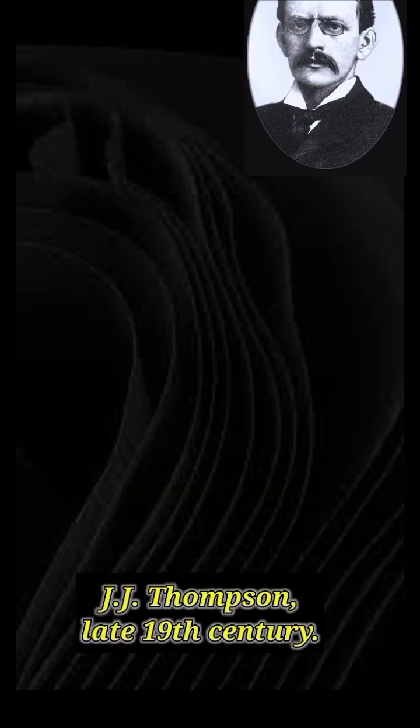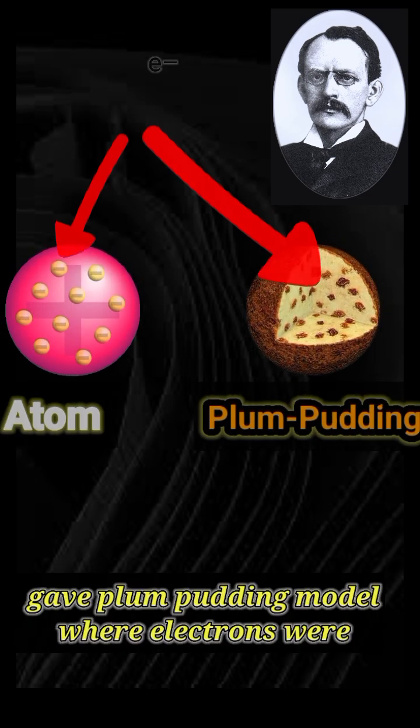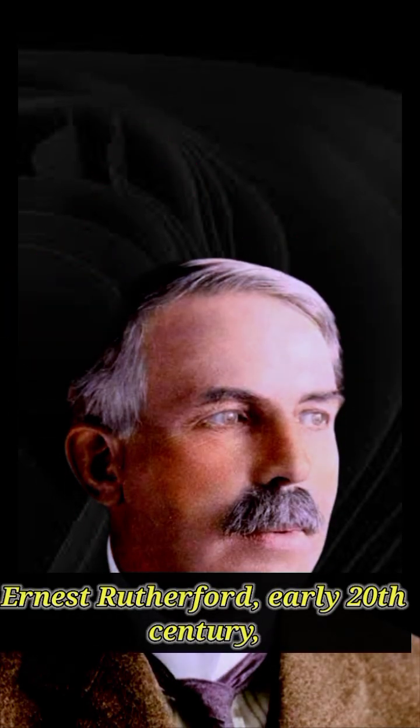J.J. Thomson, late 19th century, gave the Plum Pudding model, where electrons were embedded in a positively charged sphere.